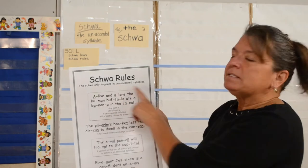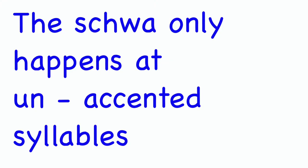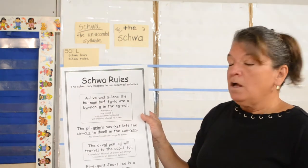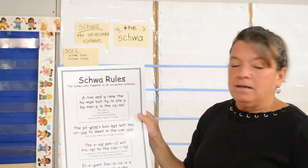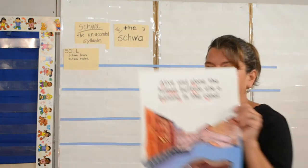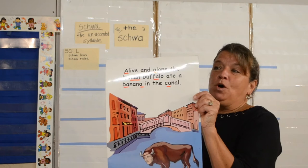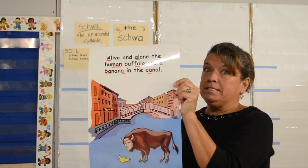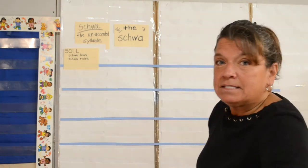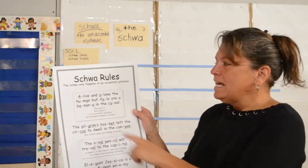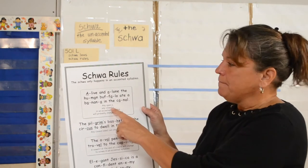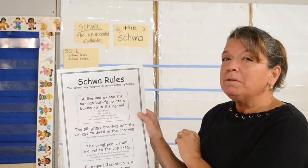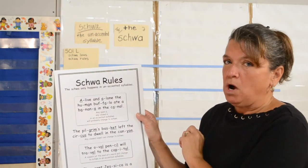The schwa only happens in unaccented syllables. So the sentence is: 'Alive and alone, the human buffalo ate a banana in the canal.' This sentence helps us realize that any open A or any closed A in unaccented syllables will probably change to the schwa — not always, but probably.